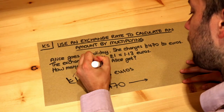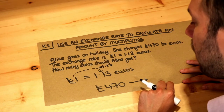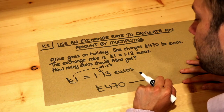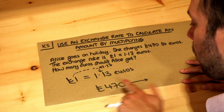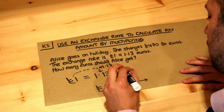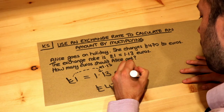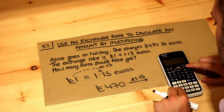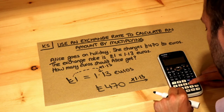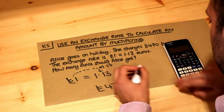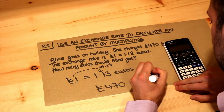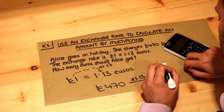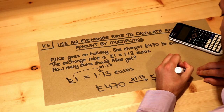We can see it's getting bigger, and we can see that we can times by 1.13 to get from 1 to 1.13 — it's 1.13 times bigger than one. So therefore if we have 470 pounds, we times by 1.13, and if I do that on my calculator I get an amount of 531.10 euros, and that's the final answer.